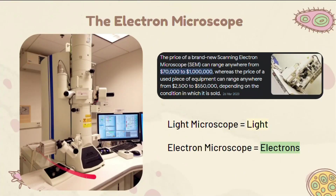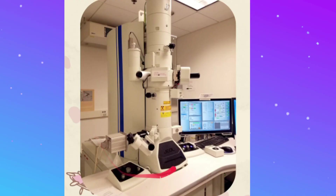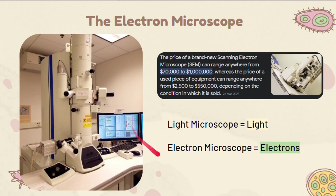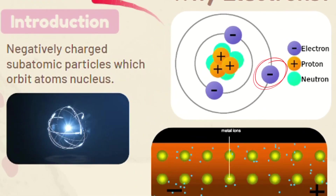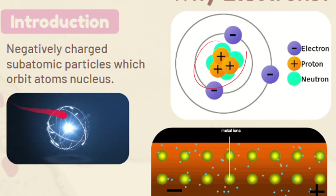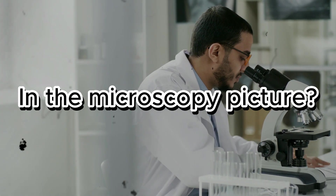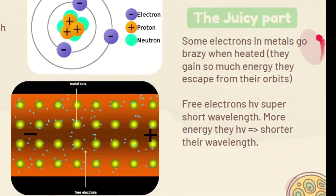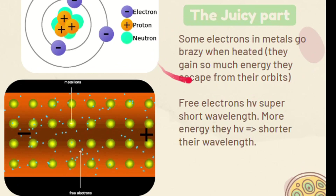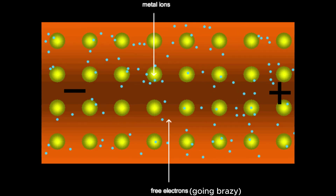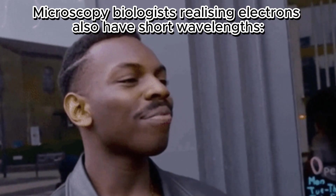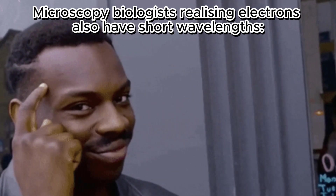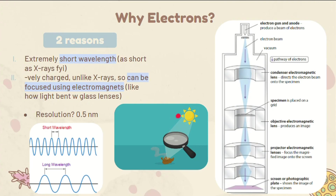Enter electron microscopes — these astronomically massive and expensive contraptions. They use electrons as a source of radiation, but why electrons? We know that electrons are negatively charged subatomic particles which orbit an atom's nucleus. When a metal is heated, some of its electrons gain so much energy that they exit their orbits and just go crazy. These free electrons have a ton of energy and hence super short wavelengths — this is one of the two reasons they're really suited for this job.